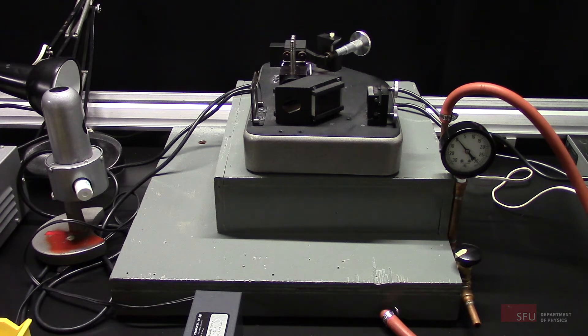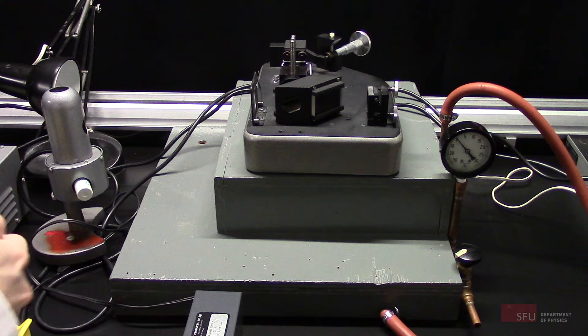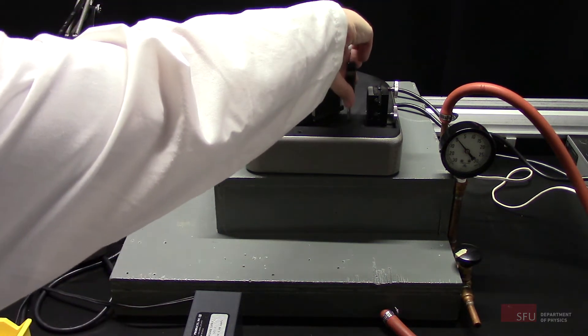To compensate for the change in pathway length due to the plates on the vacuum cell, you need to put glass plates on the other arm.